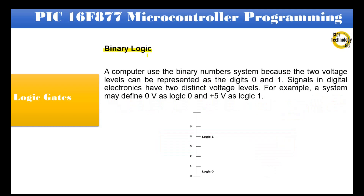Binary logic: A computer uses the binary number system because the two voltage levels can be represented as the digits 0 and 1. Signals in digital electronics have two distinct voltage levels. For example, a system may define 0V as logic 0 and +5V as logic 1. As shown in the figure, from 0 to 0.9V is considered as logic 0, and from +3V to +5V is considered as logic 1.